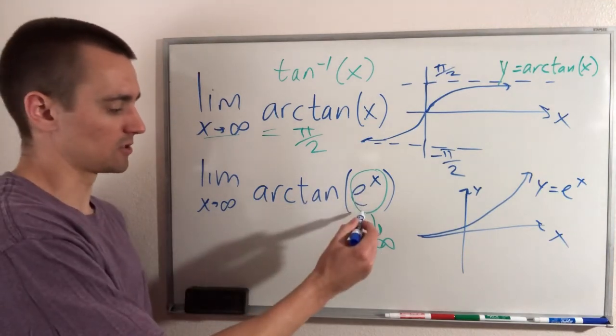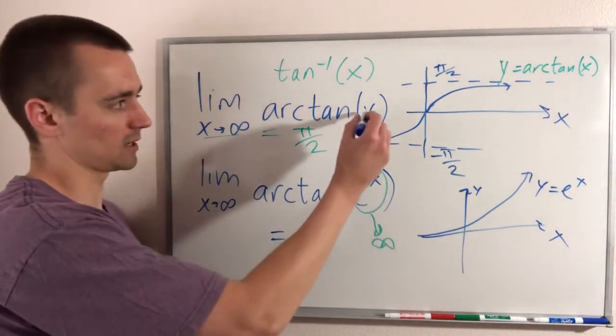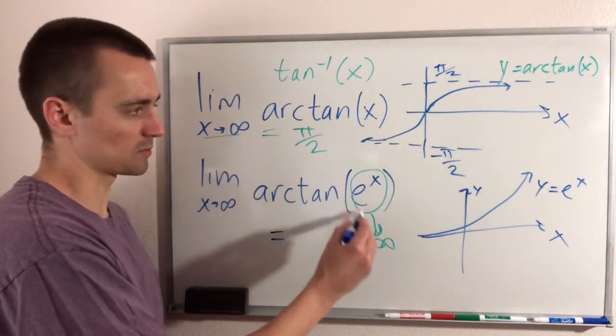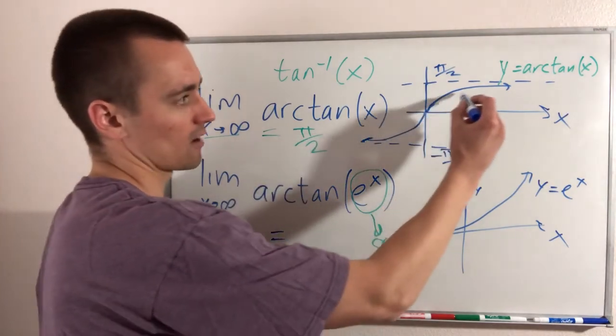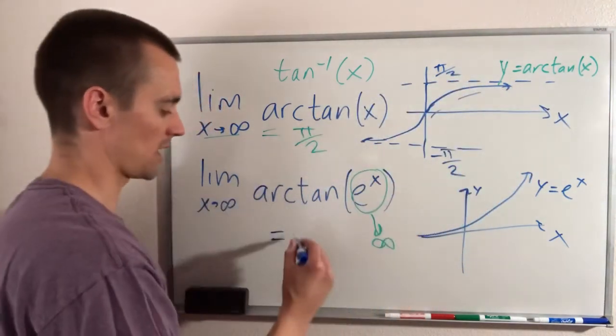So as this thing goes to infinity, this thing as a whole is going to do exactly that. As the piece that you're plugging into arctan x gets bigger and bigger and bigger, the graph of arctan just gets closer and closer to pi over 2.